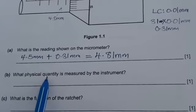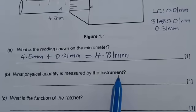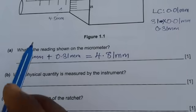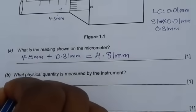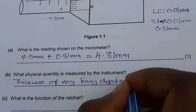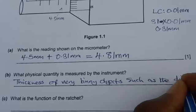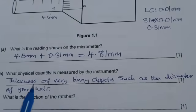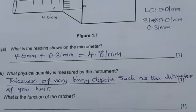Part B. What physical quantity is measured by the instrument? The physical quantity measured by the micrometer screw gauge is the thickness of very tiny objects, such as the diameter of your hair.